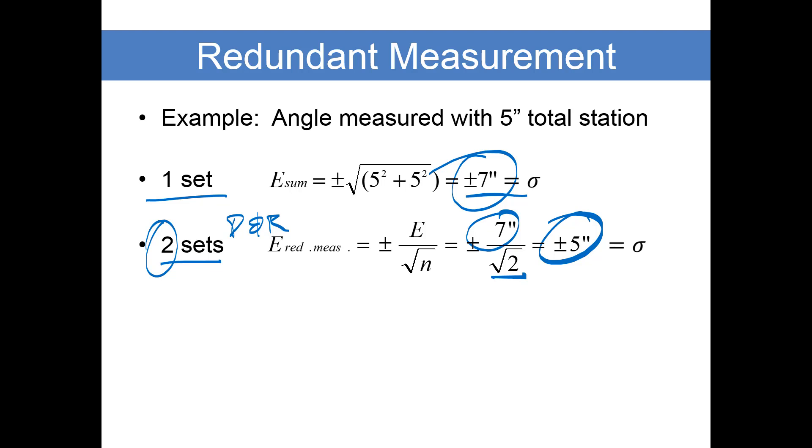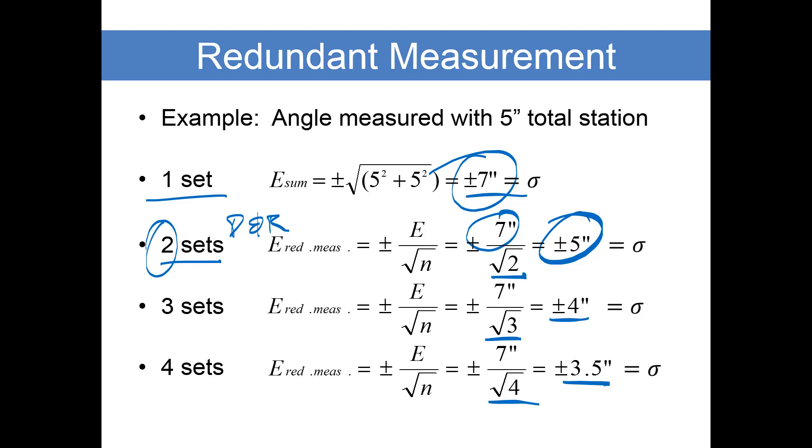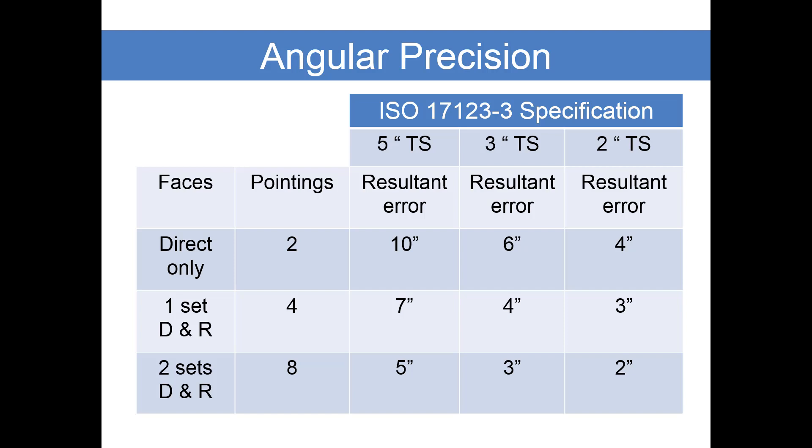If you say your instrument has a stated precision of 5 seconds, you're not going to get 5 second precision until you have turned two sets direct and reverse. If you turn three sets, this rounds to 4 seconds. If you go to four sets, you can squeeze that down to 3.5 seconds. Really at three sets of angles you are at a point of diminishing returns in terms of your gain in precision.